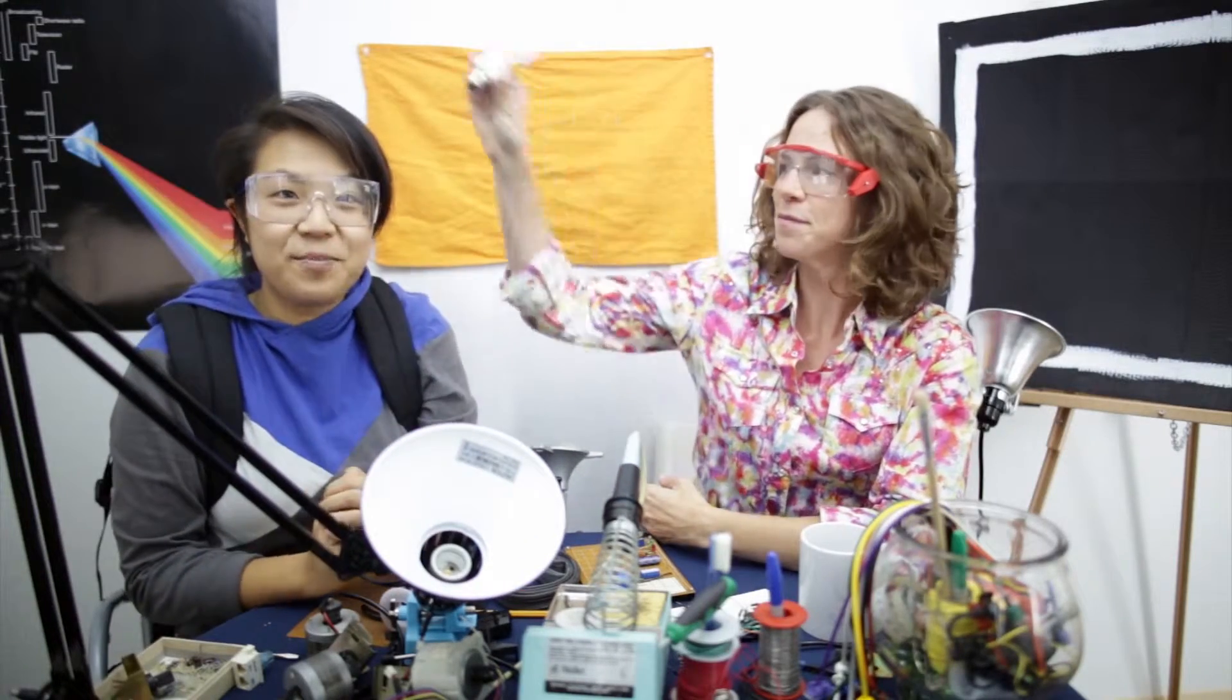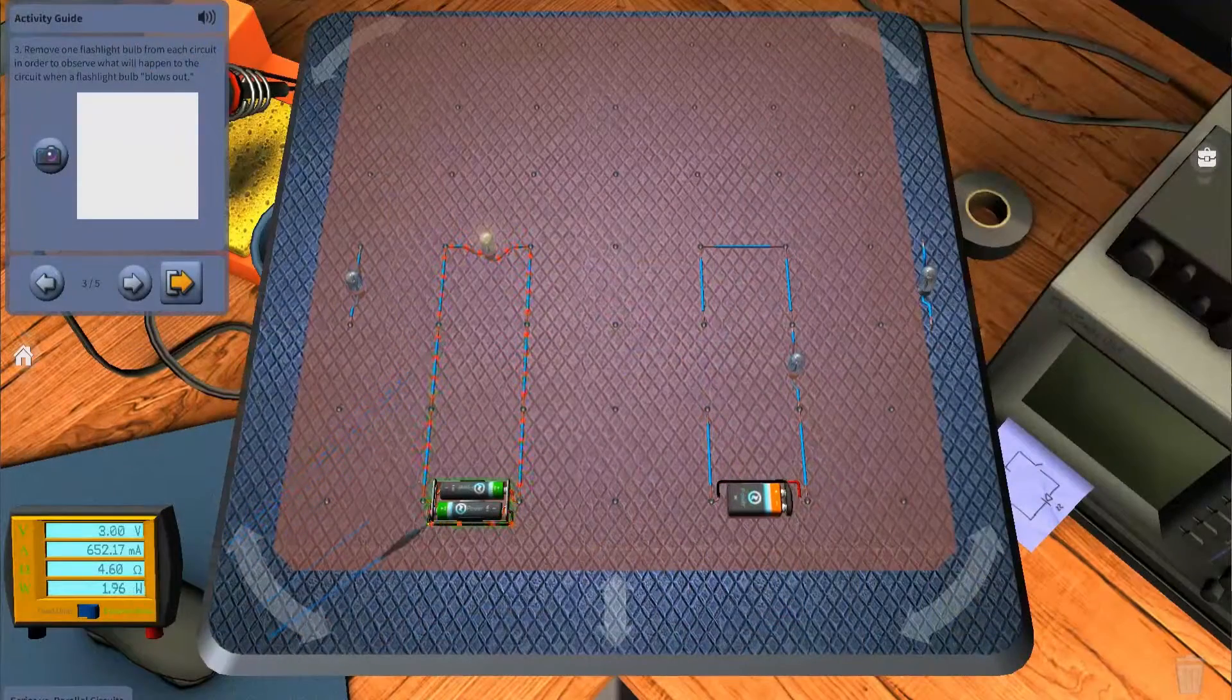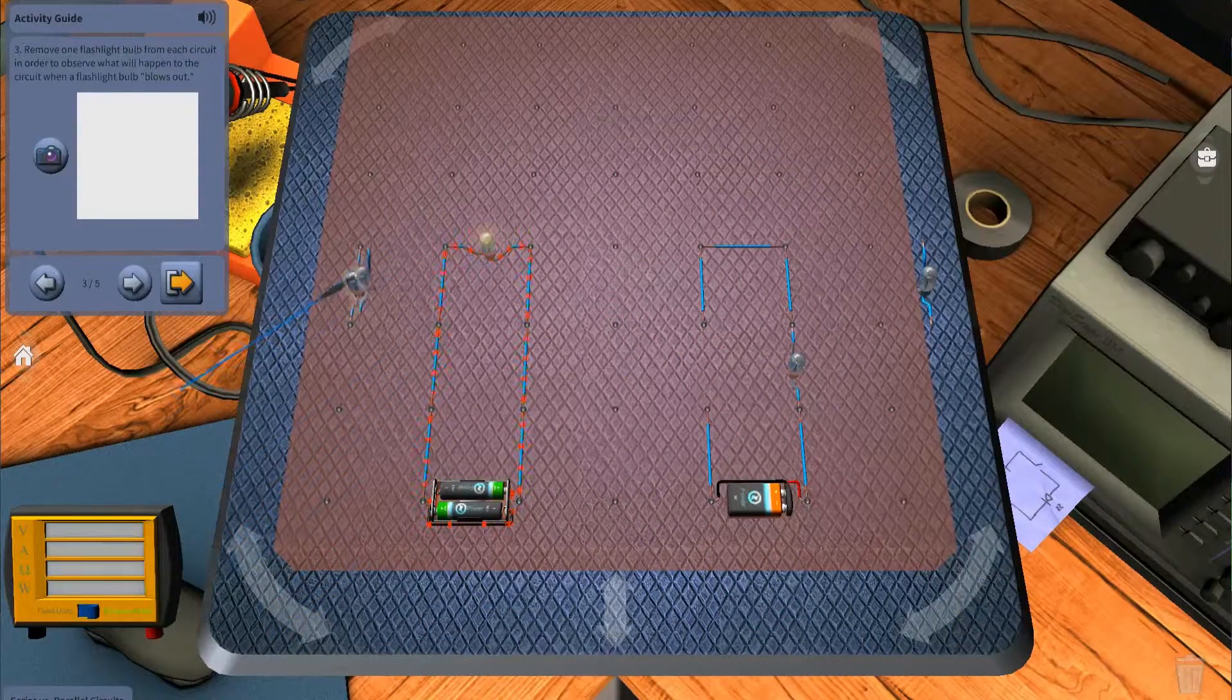Students will discover that the series circuit only has one path for the current to travel through while the parallel circuit has multiple paths.